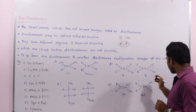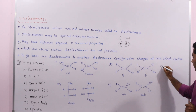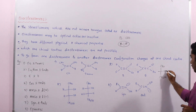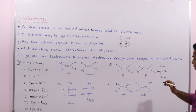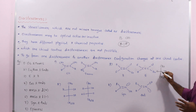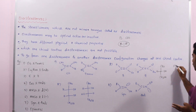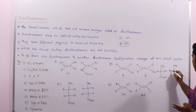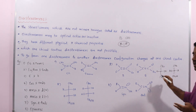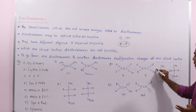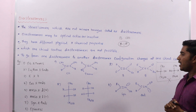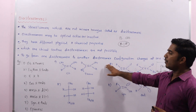For example, if you take glyceraldehyde (CHO–CHOH–CH₂OH), there is only one chiral center. If you change the configuration at that one chiral center, it compulsorily gives an enantiomer. That is why with only one chiral center, diastereomers are not possible — only enantiomers are possible.